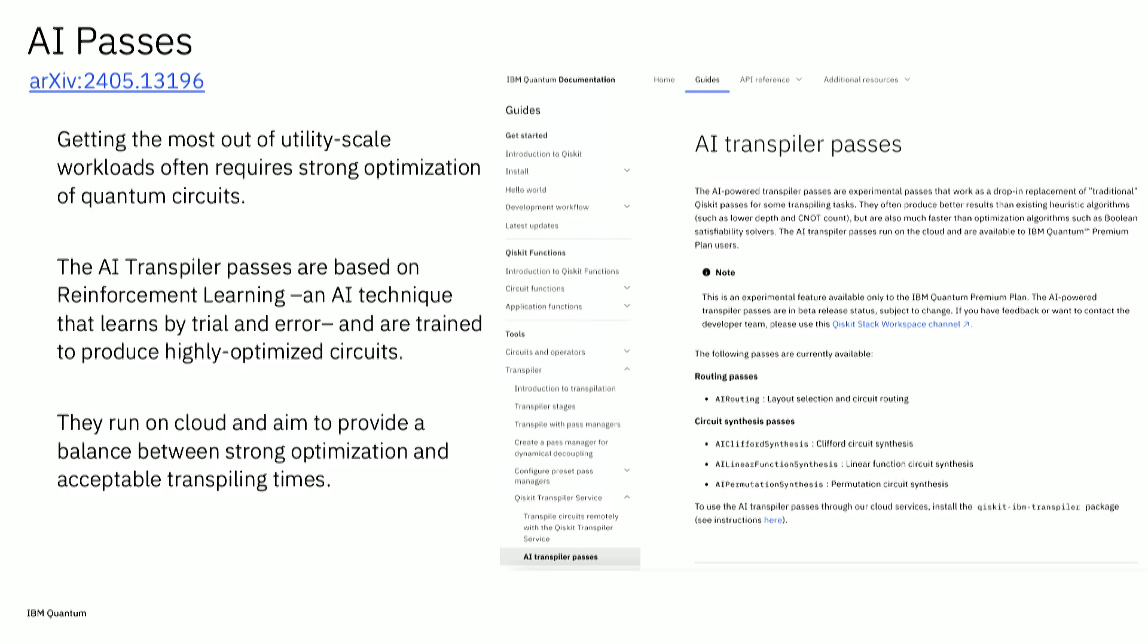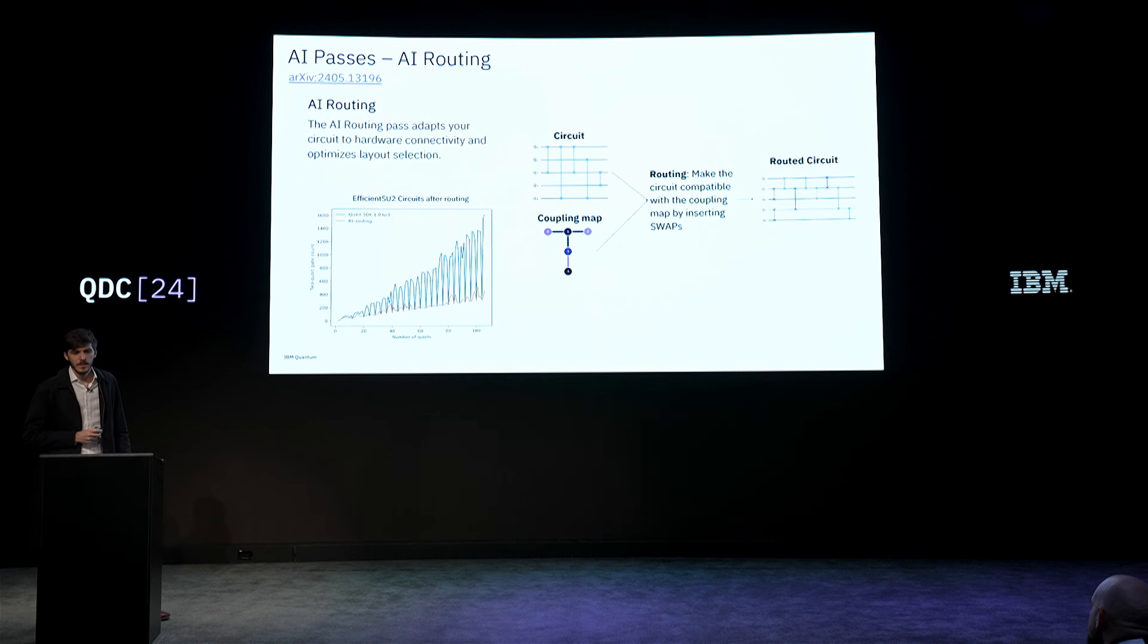We're using a method called reinforcement learning. If you are into AI you can take a look at how this works. We have a paper you can read in more detail, but I'm going to do a quick overview. We were able to apply this method to two passes. One of them is the routing pass.